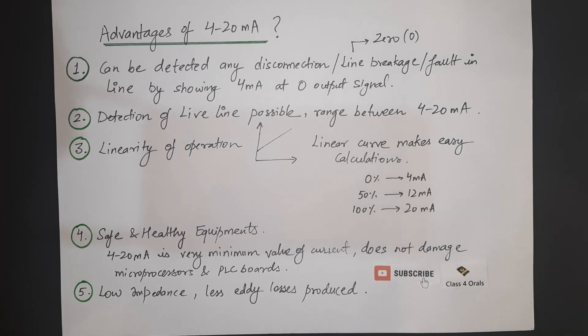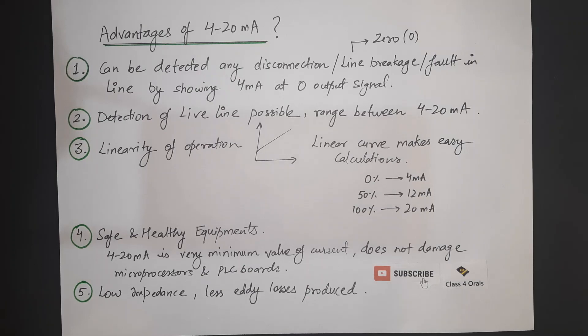So these are the details what we are using as 4 to 20 mA range for our equipments in our sensors and our transmitters. So I hope this video is very much helpful and we have understood the actual reason of putting this range.